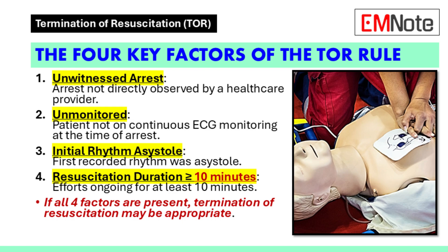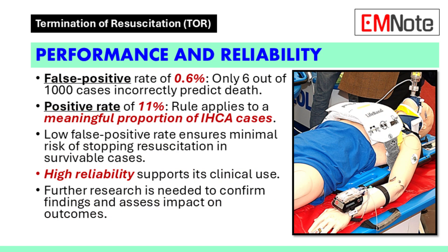And is that why this rule is so impressive? It's a big part of it. This rule boasts a remarkably low false positive rate — only 0.6%. That means in 994 out of 1,000 cases, this rule would correctly predict that resuscitation efforts would not be successful. Basically only 6 out of 1,000 times would we incorrectly predict death in a patient who might have survived. That level of accuracy is pretty incredible.